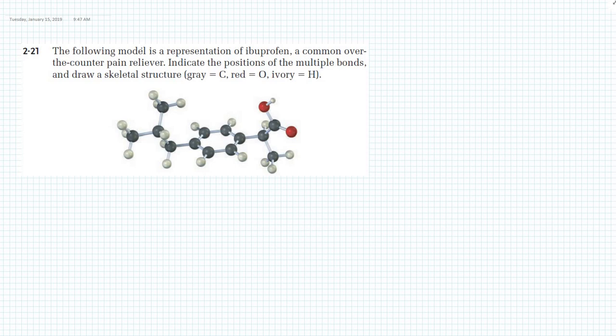The question asks: the following model is a representation of ibuprofen, a common over-the-counter pain reliever. Indicate the positions of the multiple bonds and draw a skeletal structure. The question gives you the color code of each atom as balls: gray is carbon, oxygen is red, hydrogens are ivory color. Let's start drawing a skeletal structure.